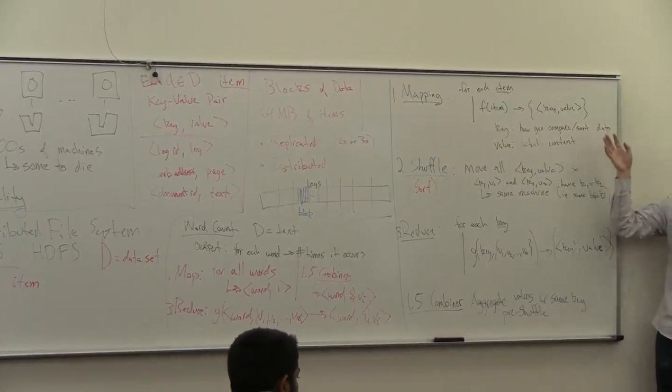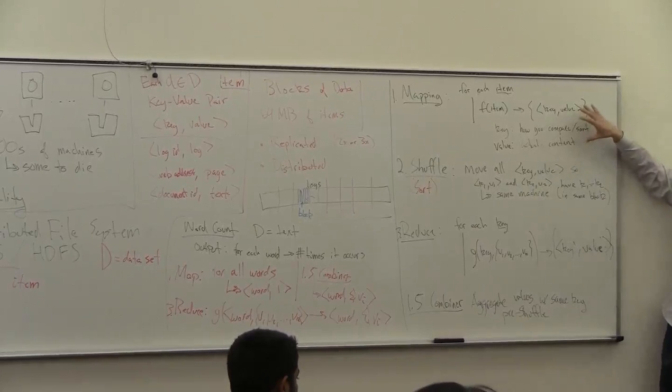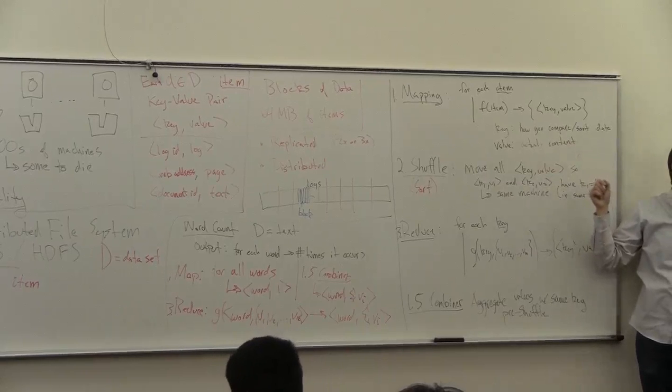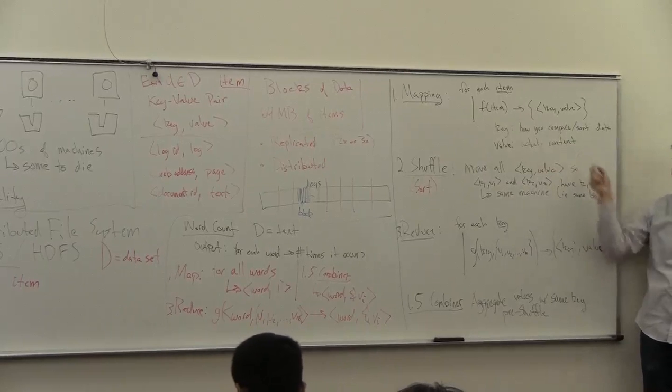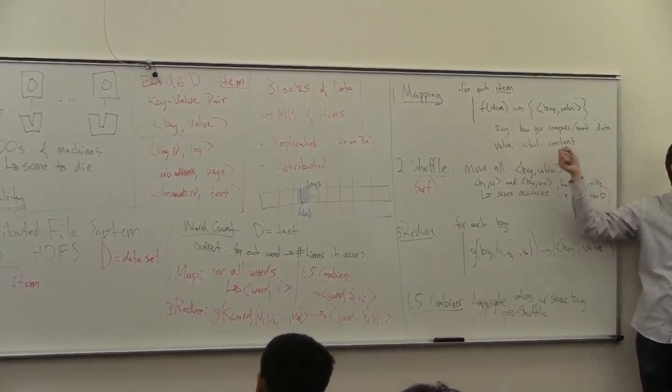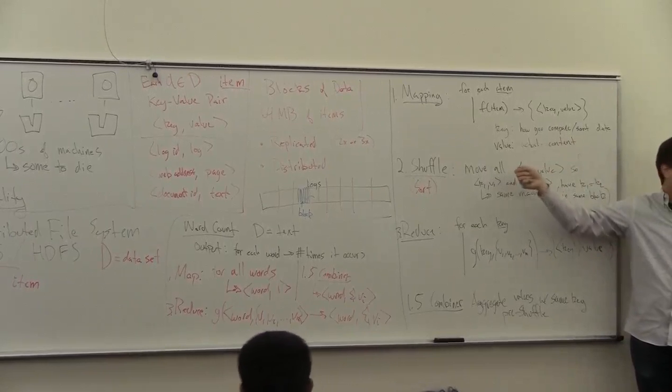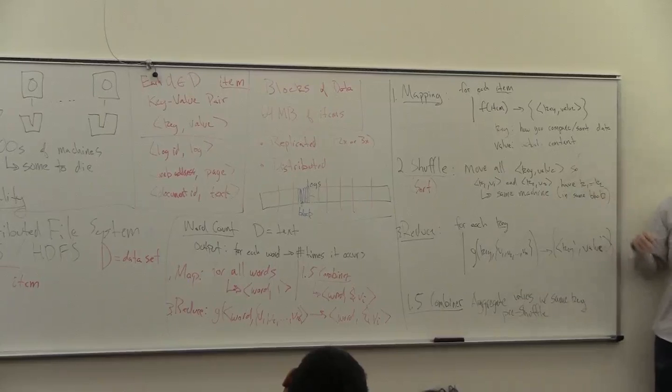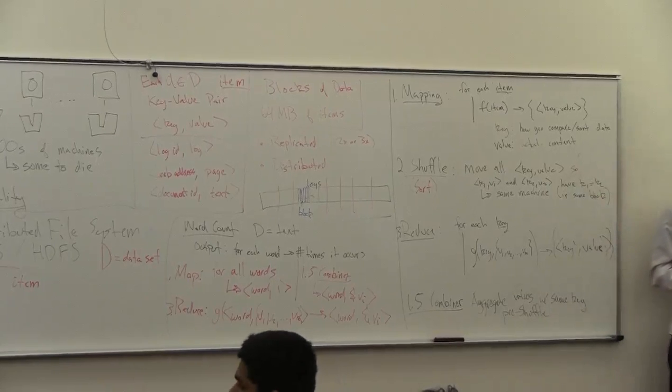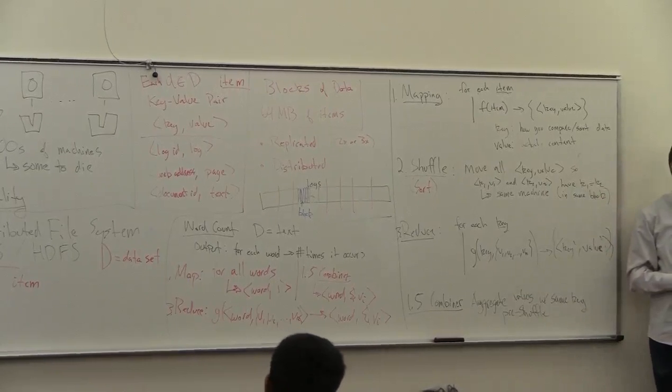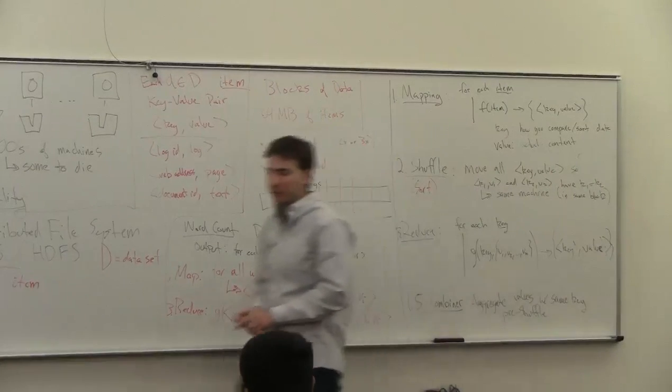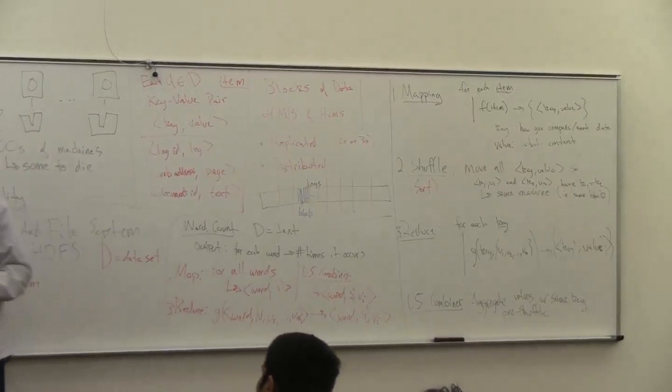If one of the machine goes down, then at the mapping phase within one round, the central node will figure out another machine that has the same, has the replicas of the data and it'll do that. But if you're doing multiple rounds and it stops, you have to wait. All right. So I'll see you next Monday.